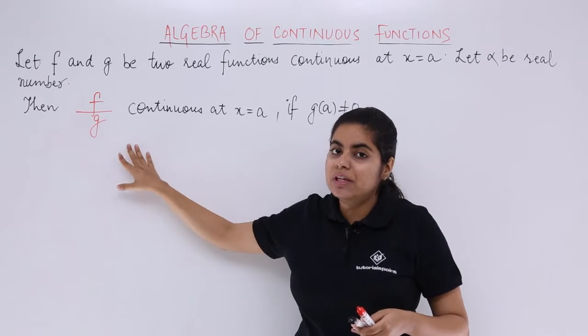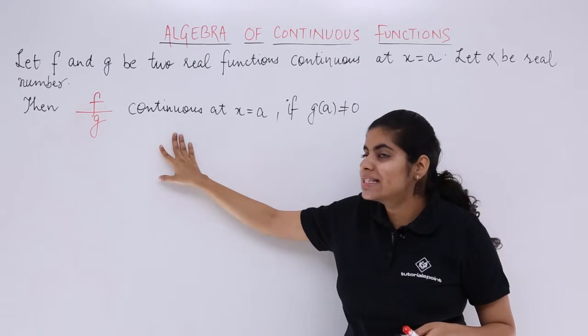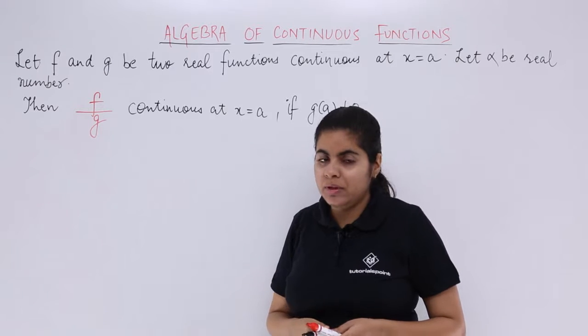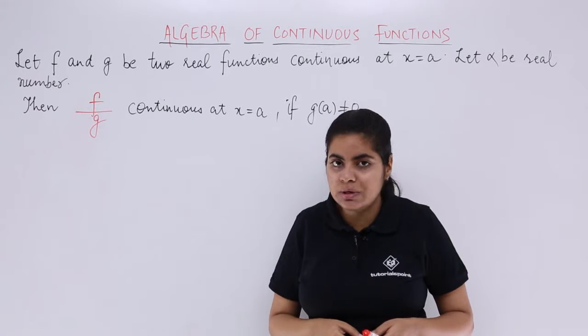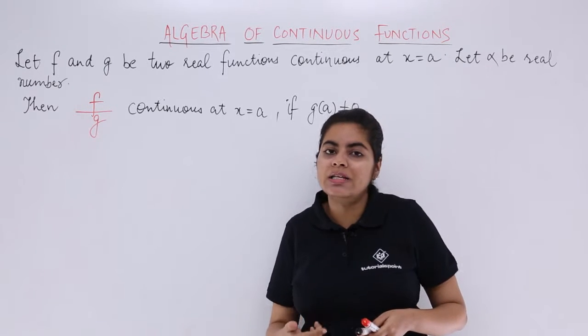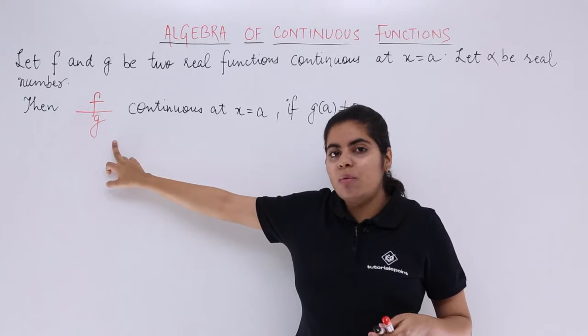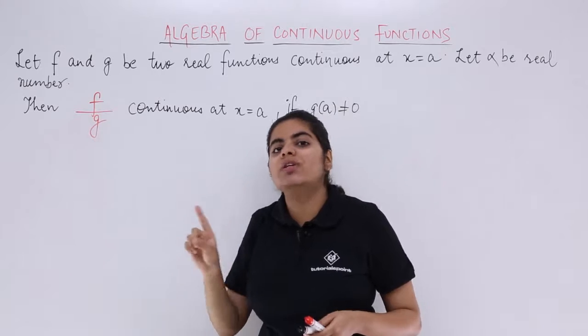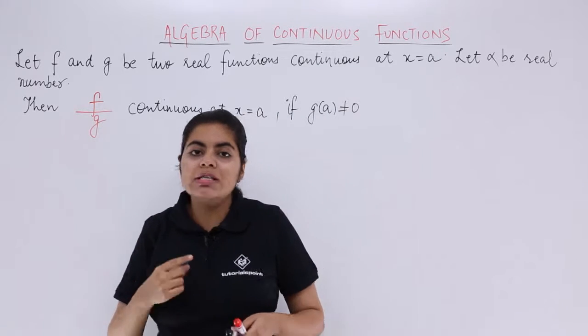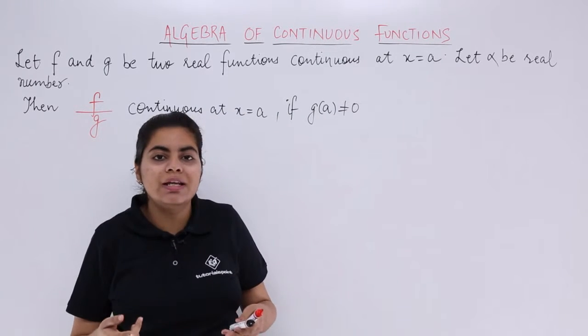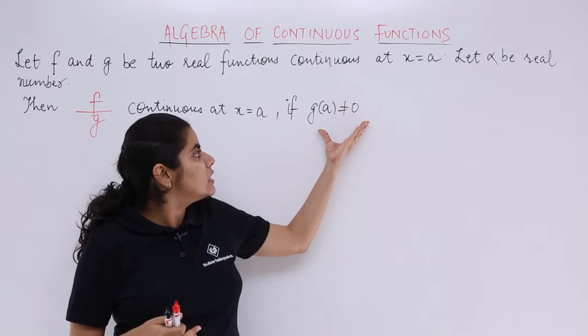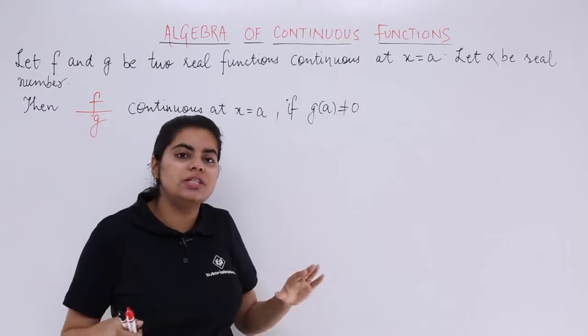So that means f upon g, and we have to prove that it is continuous at x is equal to a. But one thing needs to be taken into consideration: we need to be careful with this g because it is in the denominator. This denominator should never be equal to 0 because otherwise it becomes undefined. So provided is that g of a is not equal to 0.